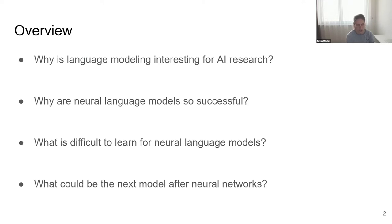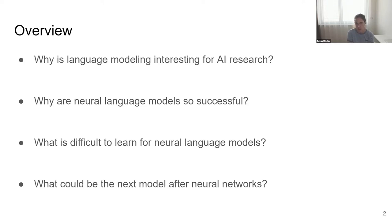I always believed that if we are to build real artificial intelligence — a machine that will be able to think like humans do or solve similar problems — then language has to be part of the solution. It would be very weird to have a super-intelligent system unable to communicate with us. Natural language processing is very important for AI research, and language modeling in particular can be seen as an AI-complete problem, as many scientists have observed.